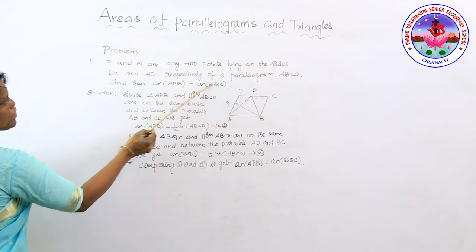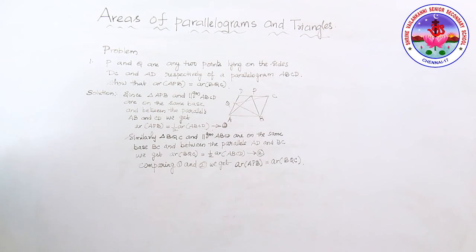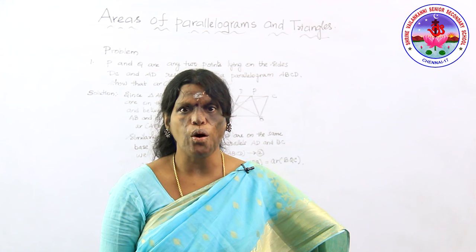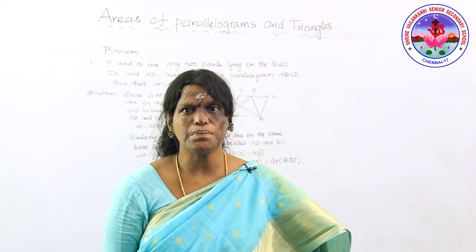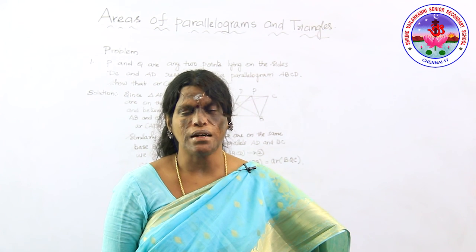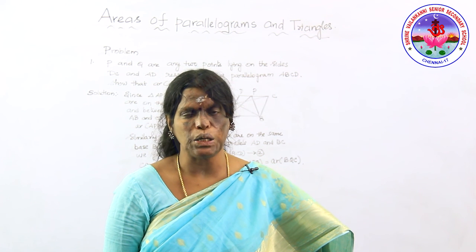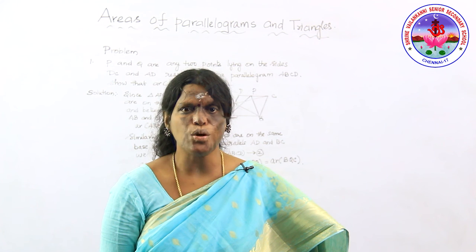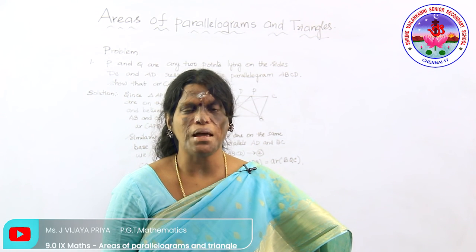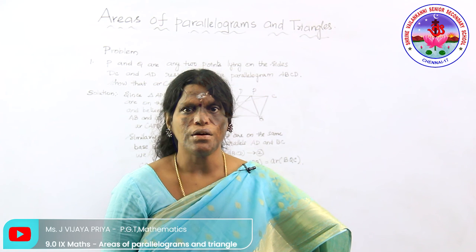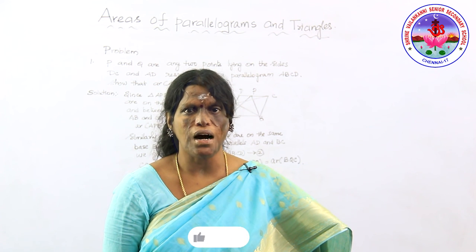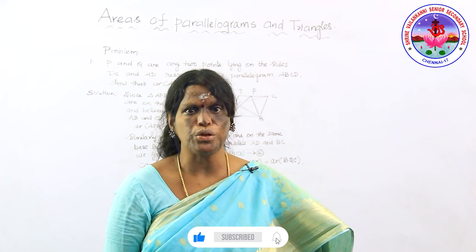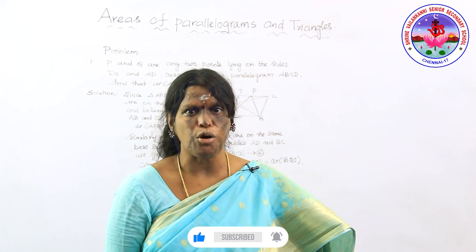To summarize: when two parallelograms are on the same base and between the same two parallels, their areas are equal. When a triangle and a parallelogram lie on the same base and between the same parallels, the area of the triangle is equal to half the area of the parallelogram. We used both these concepts to solve our problem.